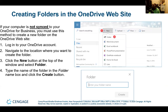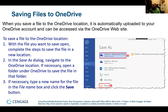Once you've created that, you have the ability to save that same file up to the cloud. When you save a file to a OneDrive location, it is automatically uploaded to your OneDrive account and can be accessed via the OneDrive website. To save the file to the OneDrive location, with the file you want to save open, complete the steps to save the file in a new location. In the Save As dialog, navigate to the OneDrive location if necessary. Open a folder under OneDrive to save the file in that folder, and if necessary, type a new name for the file in the file name box and click the Save button.